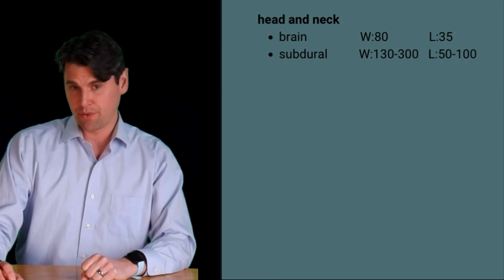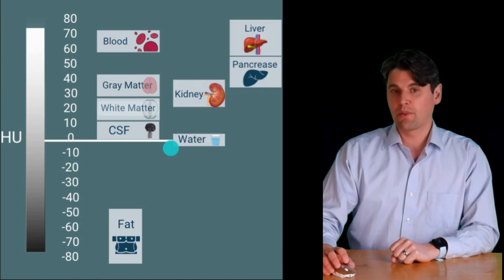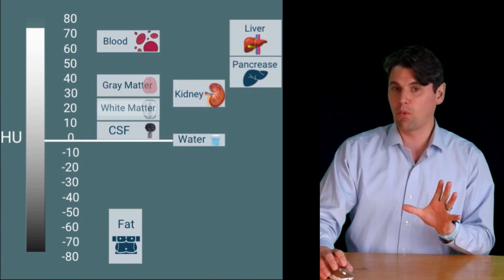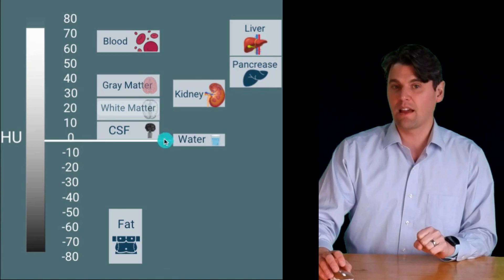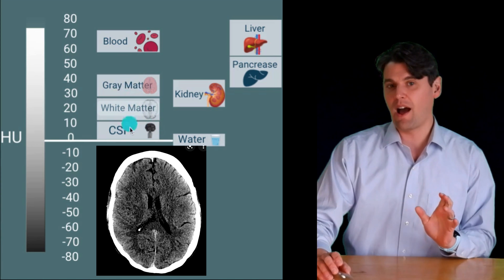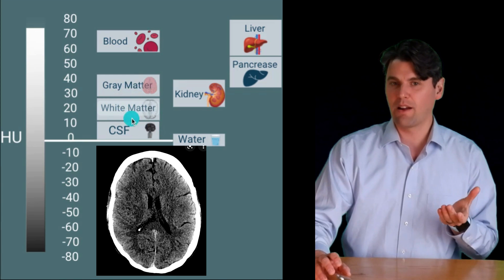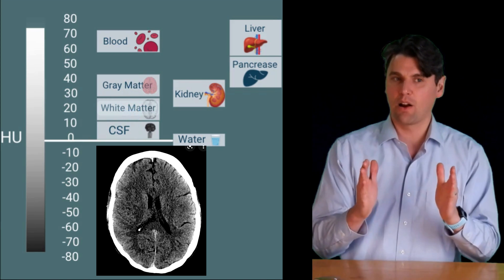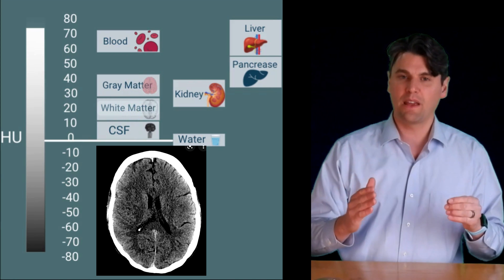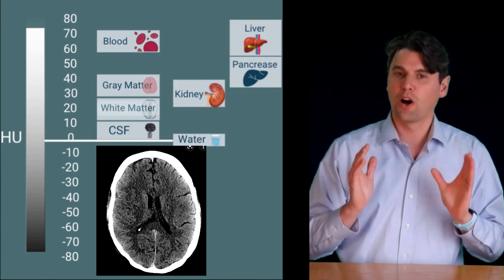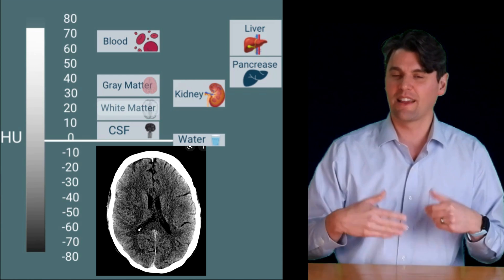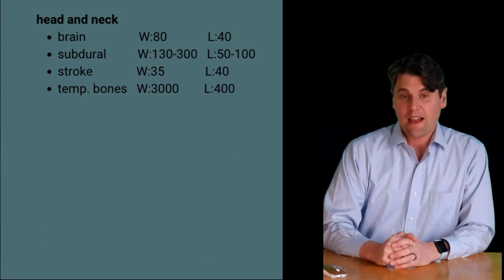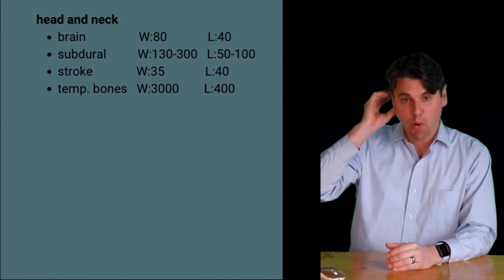When CT is performed for stroke imaging, we're typically looking for early changes between the gray and white matter. The idea is to be centered around 35 Hounsfield units with a width of around 35 as well — similar to the brain window but much narrower. This gives very sharp contrast but will have a noisier appearance in comparison with the standard brain window width.